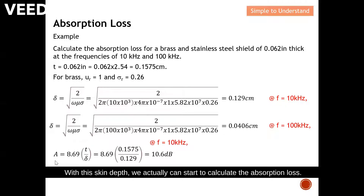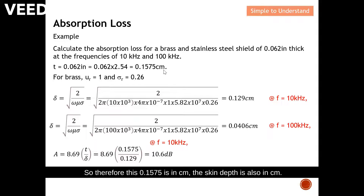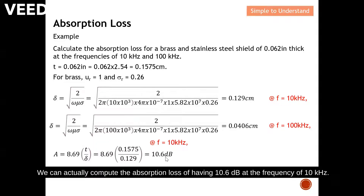With this skin depth we can calculate the absorption loss. Remember: if the thickness of the shield is in centimeters, the skin depth must also be in centimeters. So with a thickness of 0.1575 cm, we compute an absorption loss of 10.6 dB at 10 kHz.